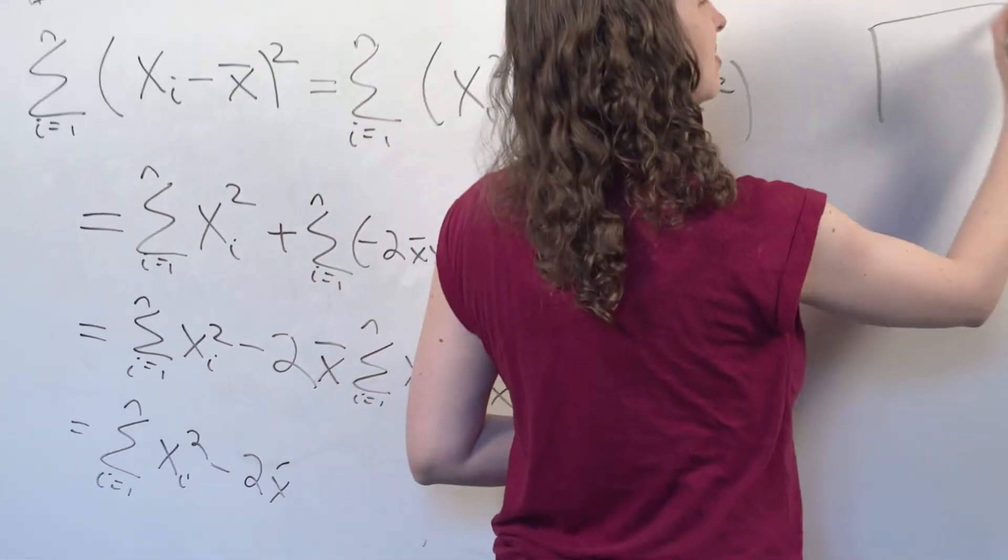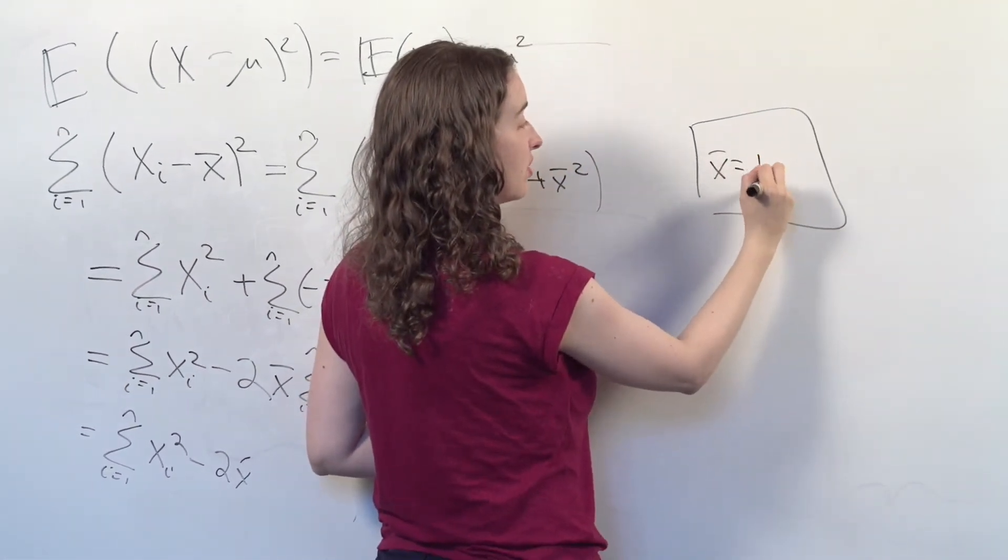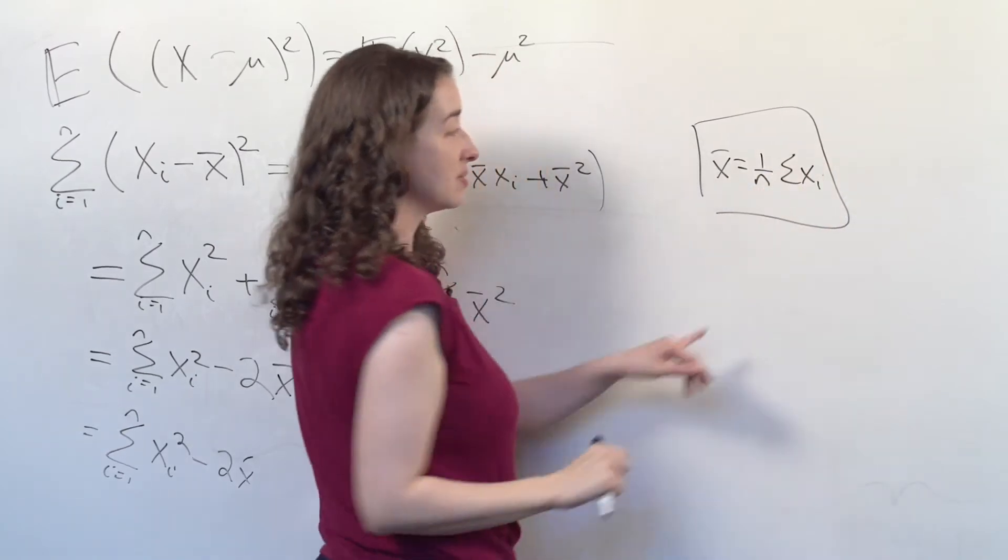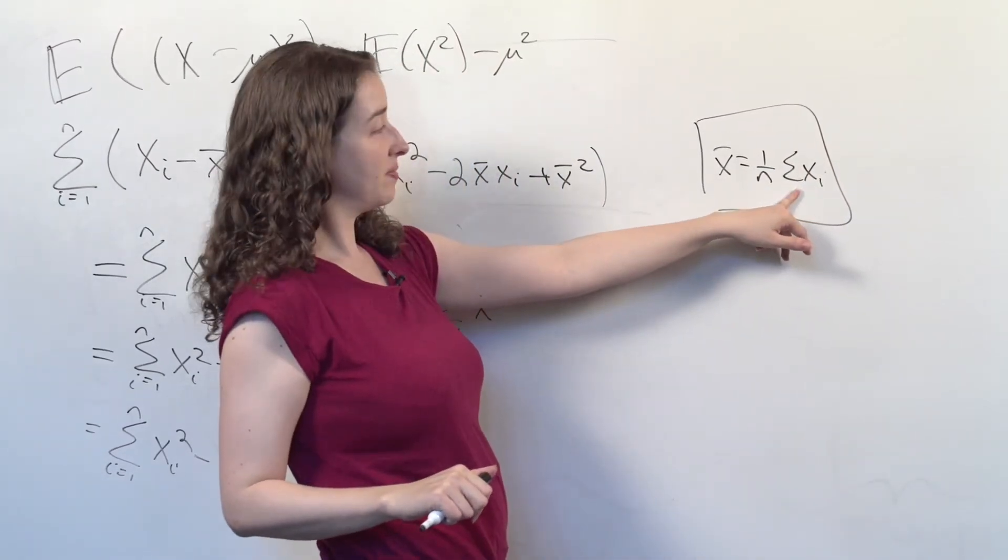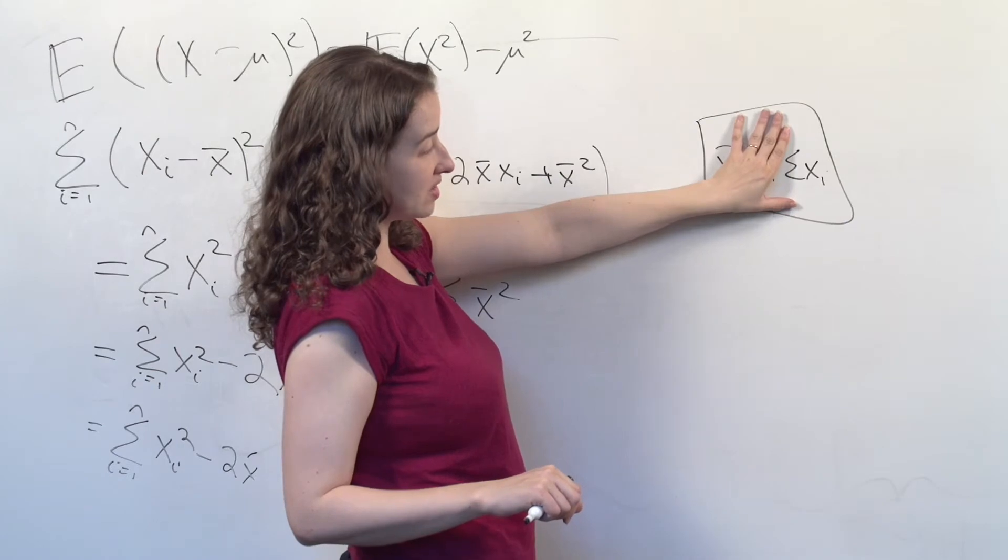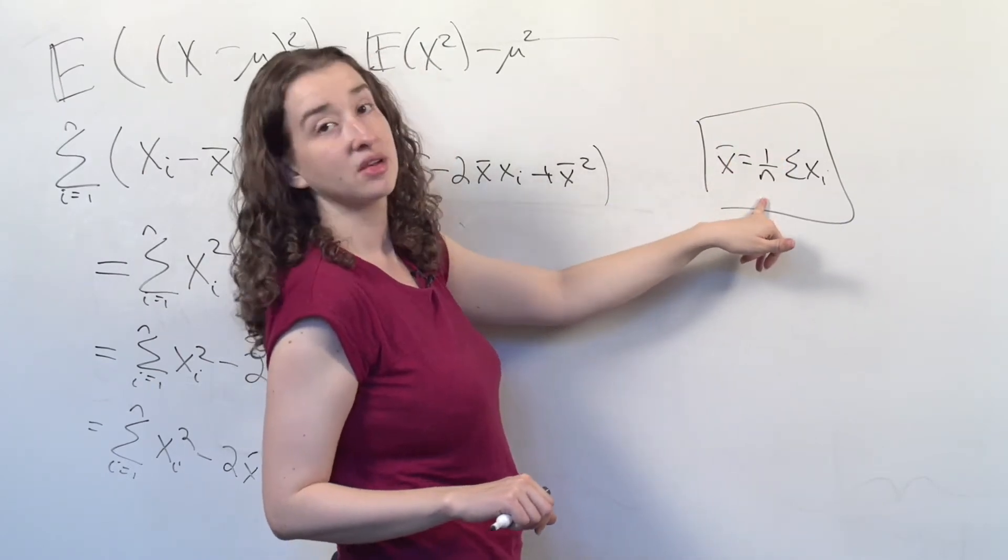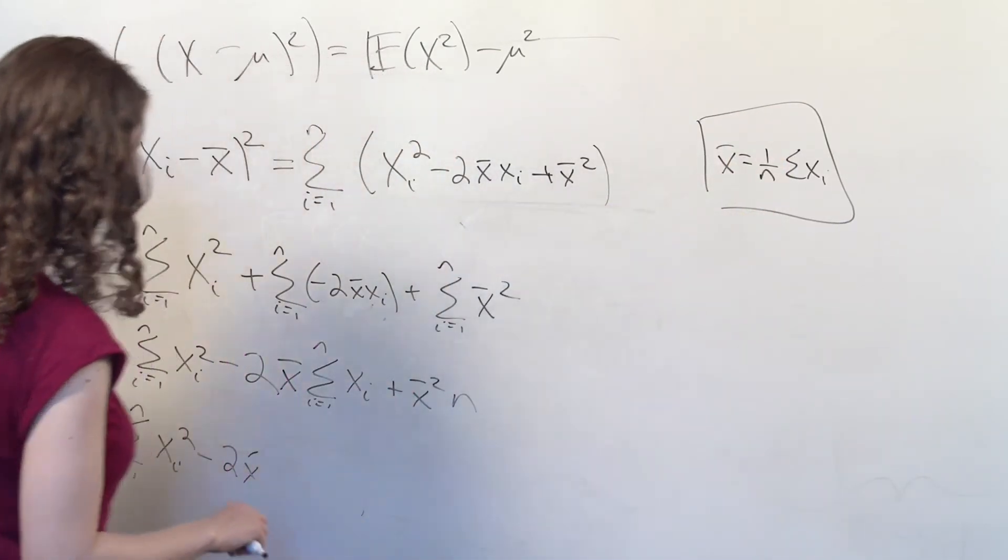Recall, here's something you know, that x bar is equal to 1 over n times the sum of all the values in the sample. That implies that the sum of all the values in the sample is equal to x bar times n. And that's the property I'm going to use right here.